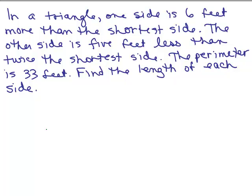If we're talking about a triangle, we know we have three sides. So we want to define those three sides. We know the perimeter is the sum of the three sides. Now, let's read through it again. It says one side is 6 feet more than the shortest side.